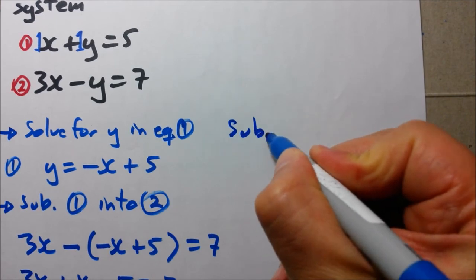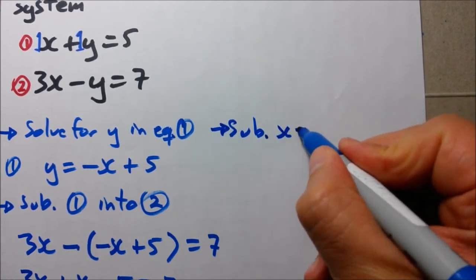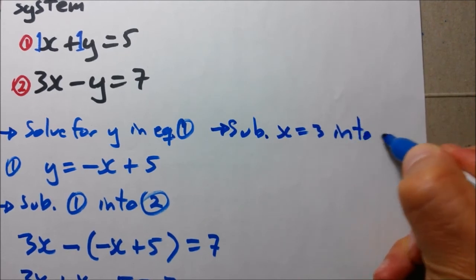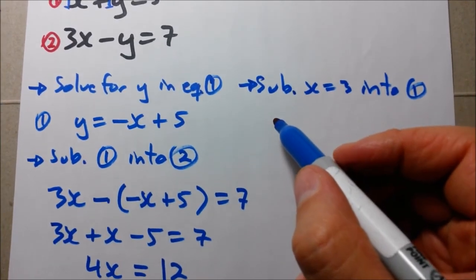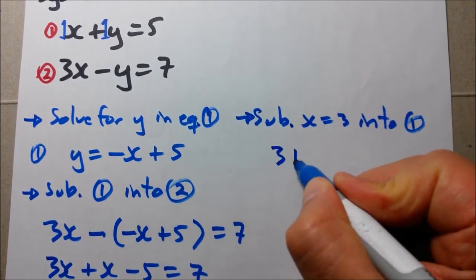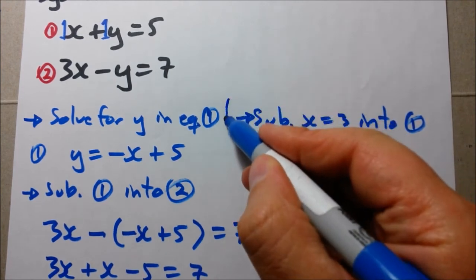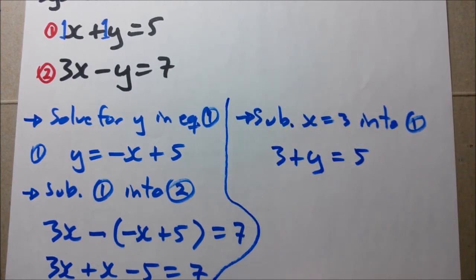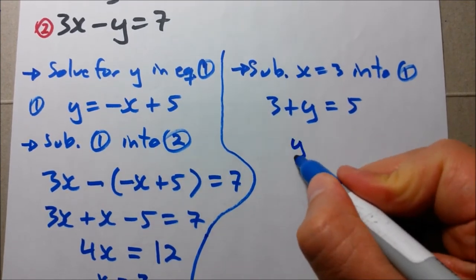Next step. Sub x equals 3 into equation 1. So we're going to do that now. And our equation 1 is what? 3 plus y equals 5. Let me just do a limit here just to show so we won't get confused. So 3 plus y equals 5. Now let's solve for y.